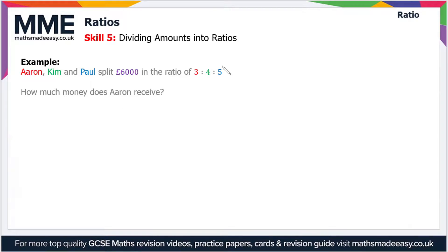The first thing we have to do when we divide amounts into a ratio is sum up the total number of parts. So here we have parts 3, 4, and 5. If we add these together, 3 + 4 + 5 = 12. So that's the total number of parts.